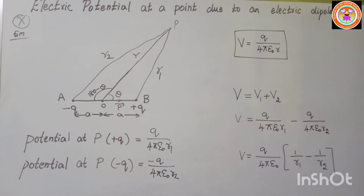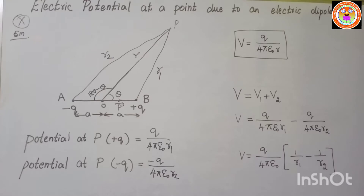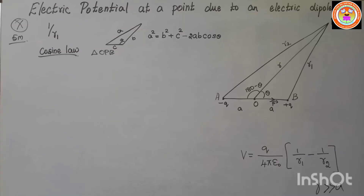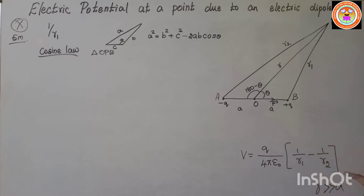Suppose the point P is far away from the dipole — when r is very much greater than a — this equation can be expressed in terms of r. So V = q/(4πε₀) × (1/r1 − 1/r2), and we proceed to calculate 1/r1 and 1/r2.